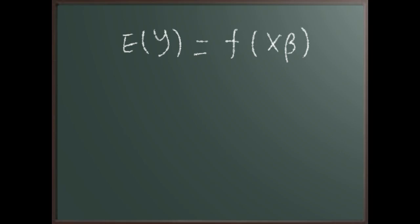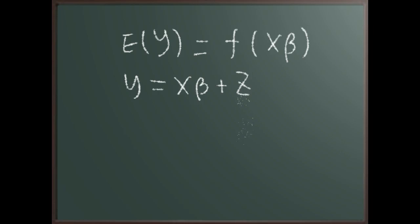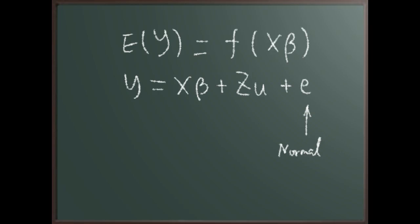In a linear mixed model, y is explained by fixed effects X-beta, plus random effects Z times u, plus a residual term e. When the residuals are normal and the random effects u are also normally distributed, we call this a linear mixed model, or LMM.